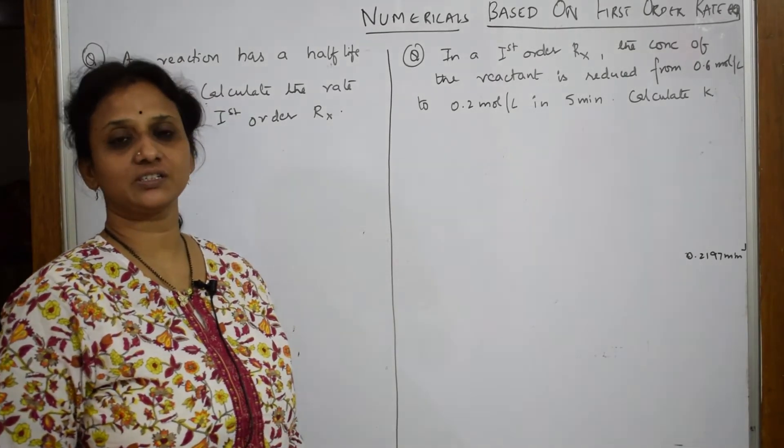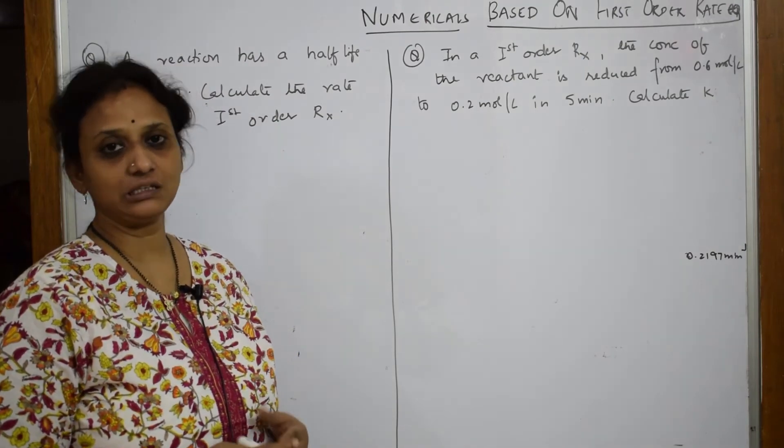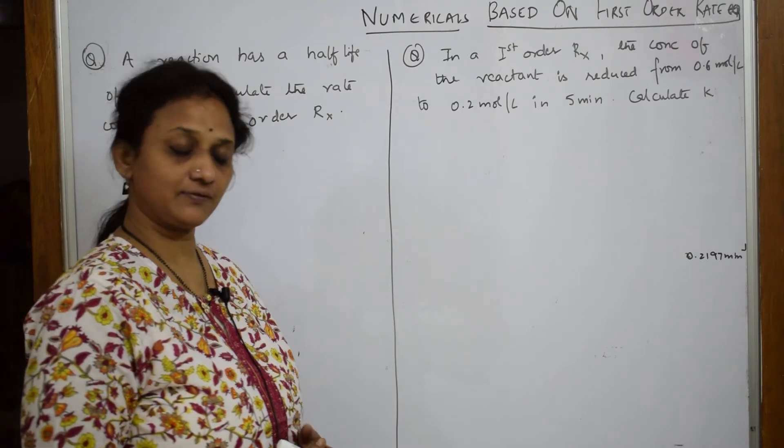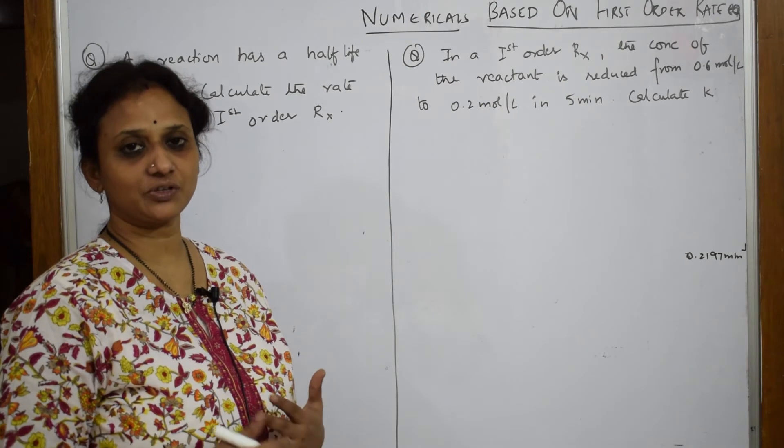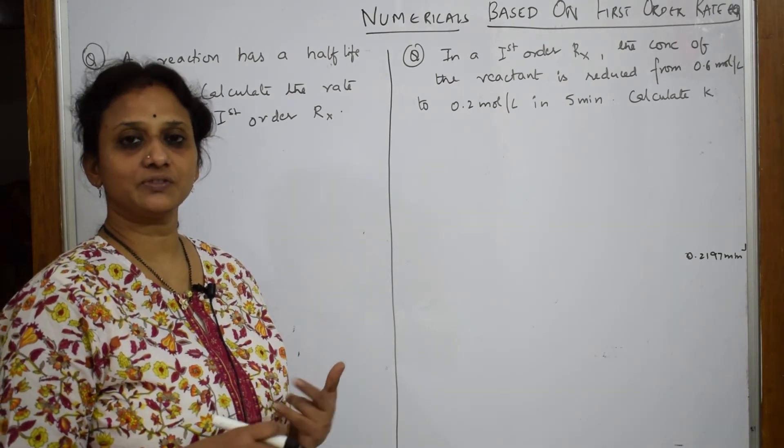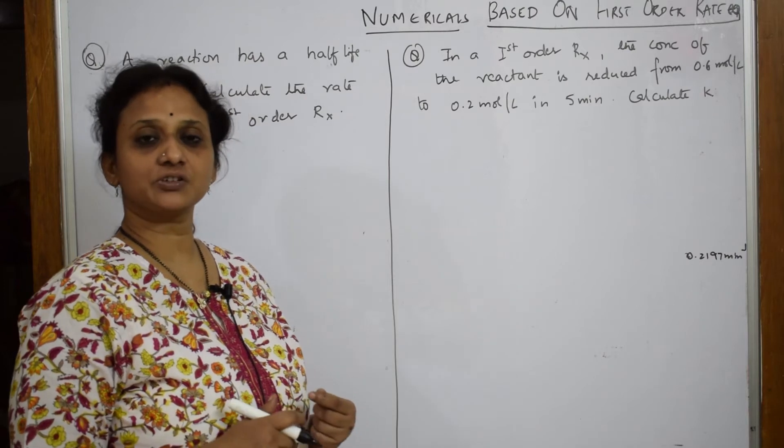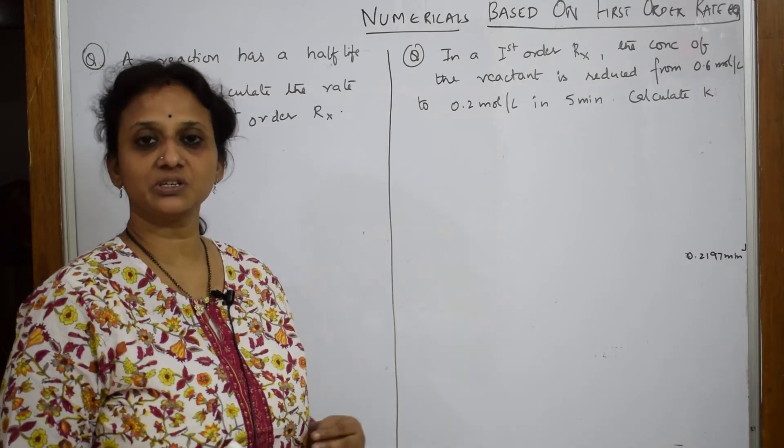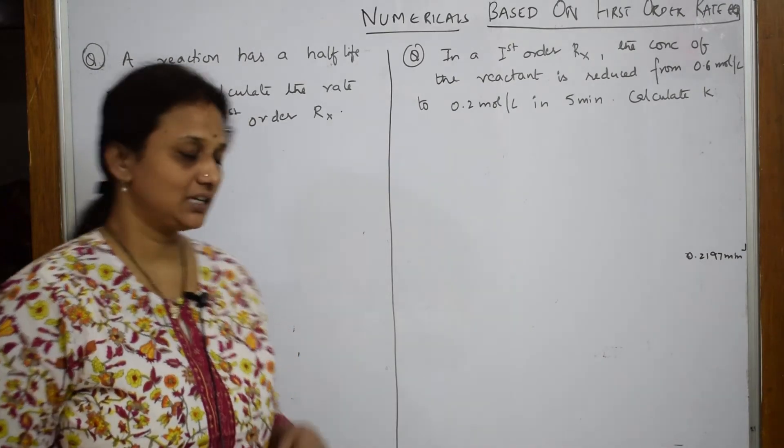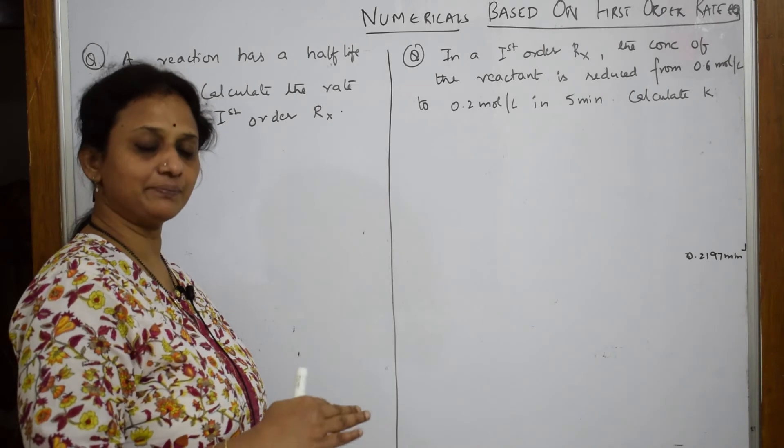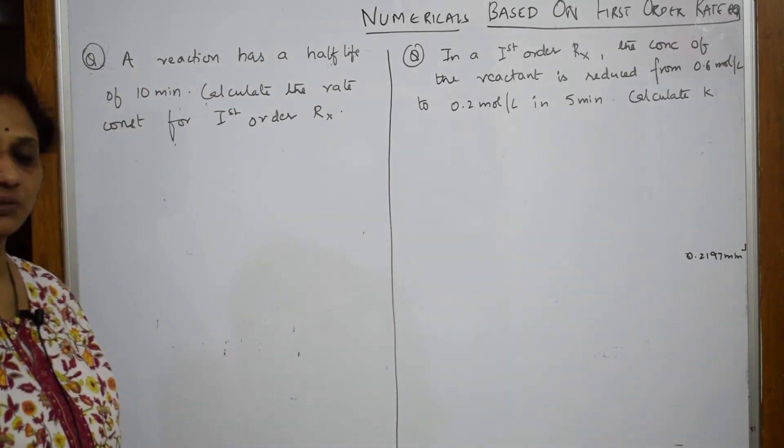So, we have learnt the zero-order rate equation, the half-calculation of half-life period, and the units for zero-order reaction. Then, we also studied about graphical representation. I am sorry, we are speaking about first-order. So, we have learnt rate equation. Then, we have done with the half-life period, the first-order, then units, and then graphical representation. Now, let us start with the numericals of your first-order rate equation. Let us read this simple. I am going from the basic simple example to a bit complicated numericals.